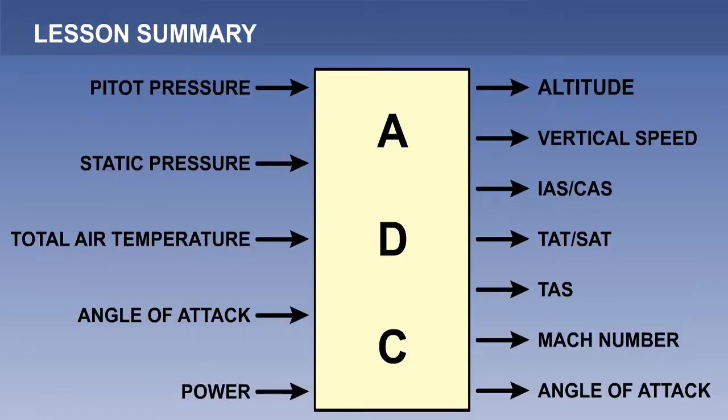The basic five inputs to a modern ADC are pitot, static, total air temperature, angle of attack, and power.